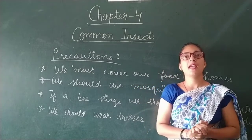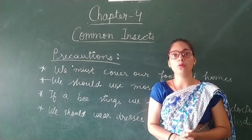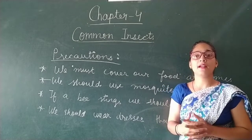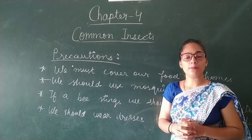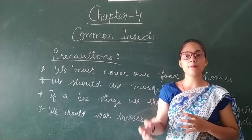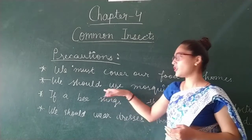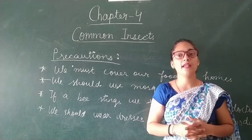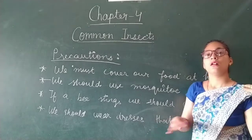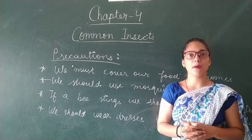Here are some precautions that can help us prevent diseases spread by insects. We must cover our food at home. We must not throw food in the open, but rather dispose of it in a dustbin. We must not let water collect or stagnate at one place for a very long period of time. We should keep our surroundings clean. We should use a mosquito net or a repellent to keep mosquitoes away. We should wear clothes that properly cover our body, which will protect us from insect bites and mosquitoes.